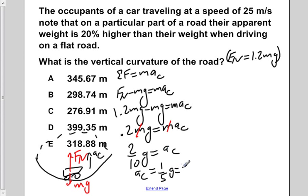However, we remember that a centripetal equals v squared over r. So we now have that 1 fifth the acceleration of gravity is equal to v squared over r.